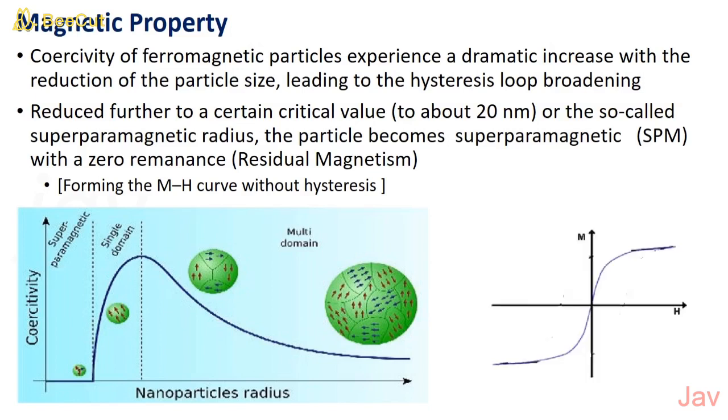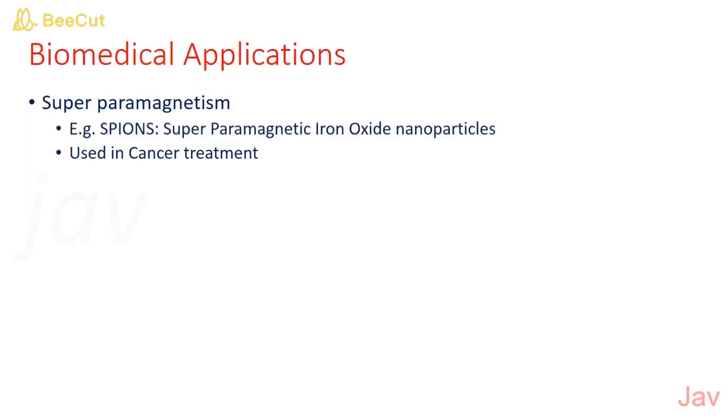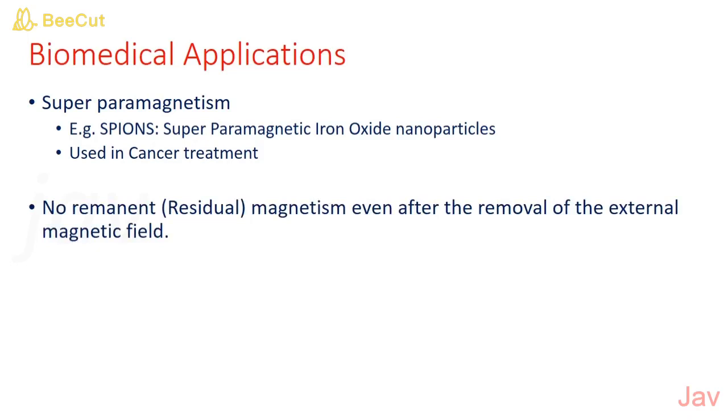The figure shows the MH curve of a superparamagnetic material. Superparamagnetic iron oxide is used in treatment of cancer. The advantage is no remnant or residual magnetism even after the removal of the external magnetic field. No aggregation of magnetic particle in the blood vessel after a diagnostic measurement or a therapy.